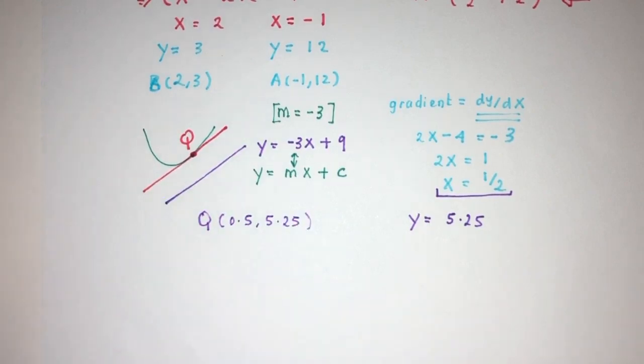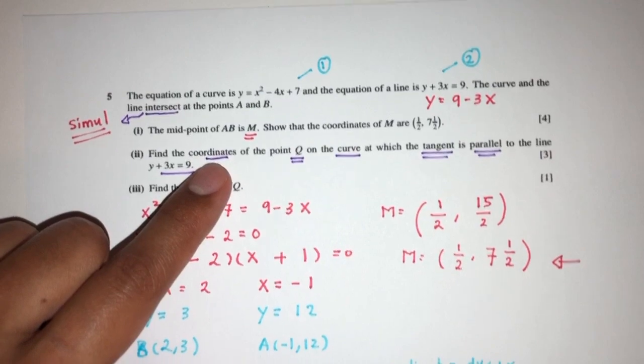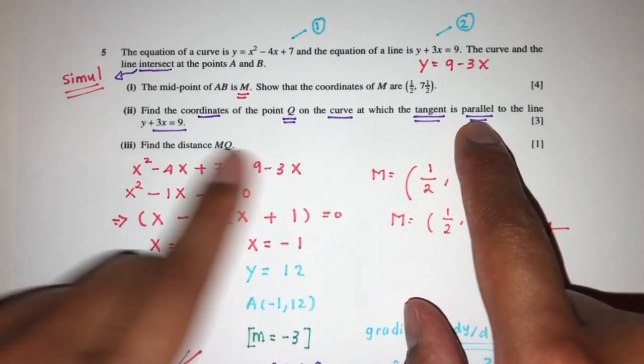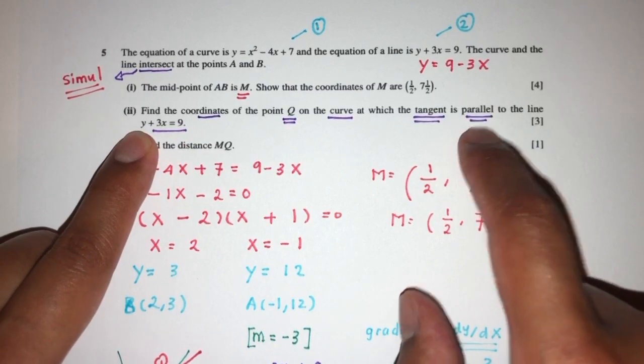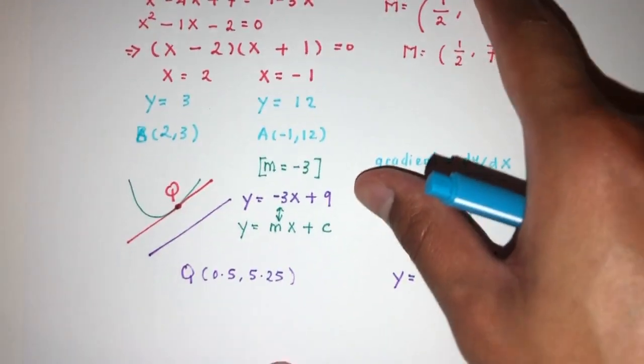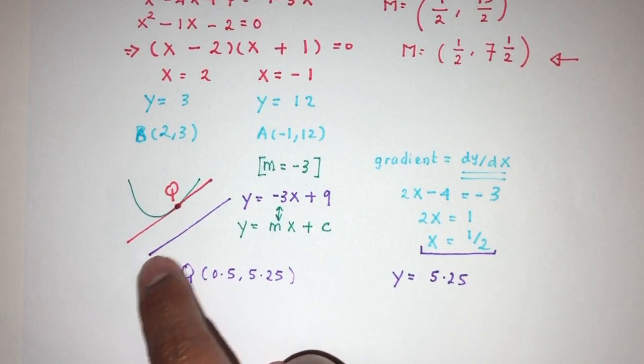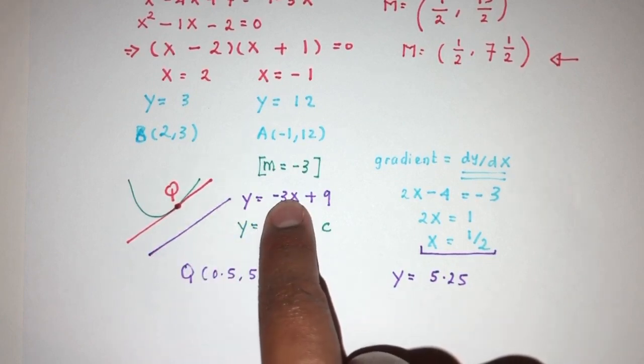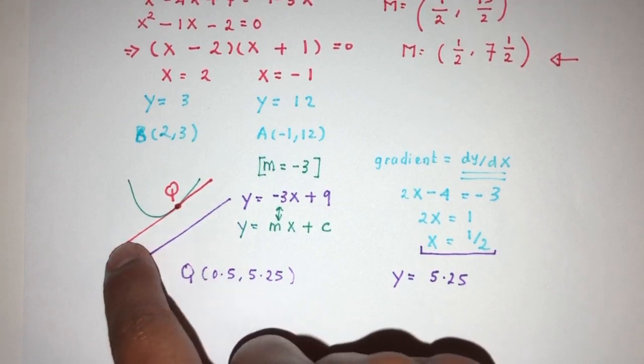So the main concept behind this question is we have to understand that because we need the tangent to be in the same direction as the line, by same direction we understand the gradient has to be the same. So we first find the gradient of the line, it equals -3.